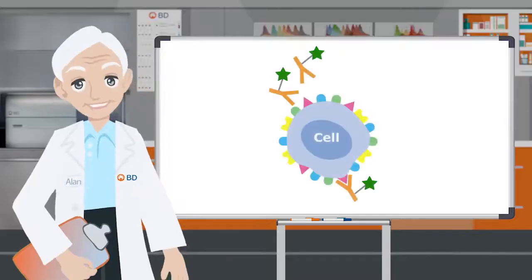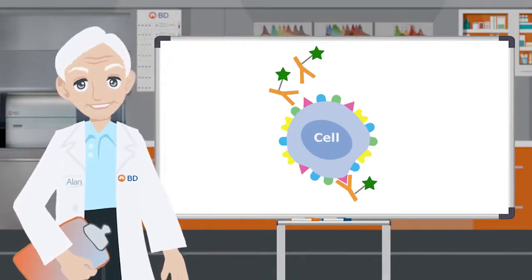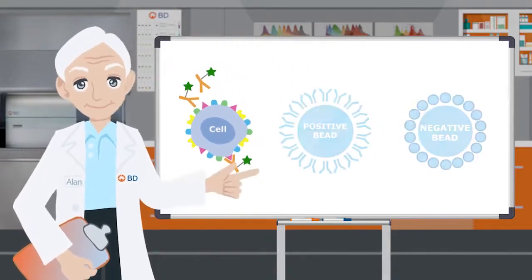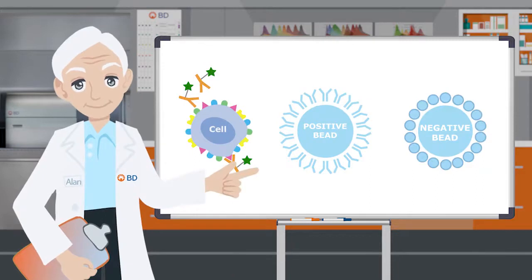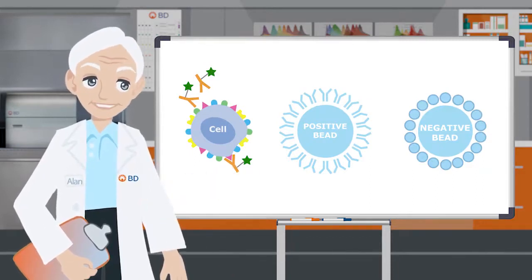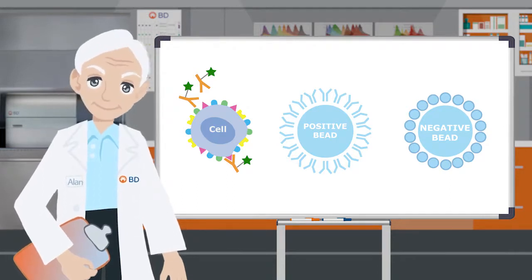Single-color controls typically come in two forms: stained cells or antibody capture beads, also called compensation particles, such as the BDB compensation particle. Each has its advantages and disadvantages.